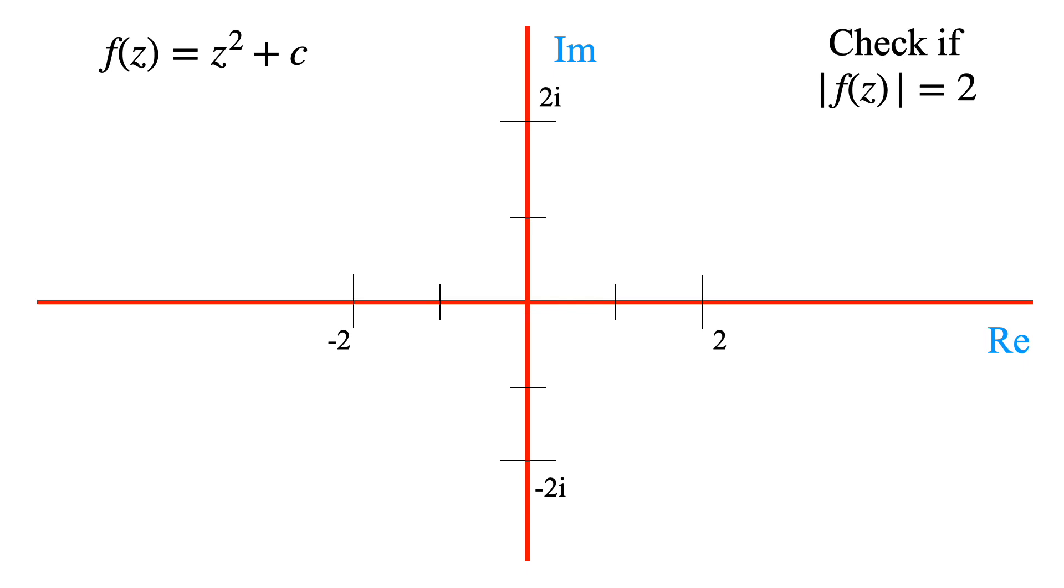All the points that satisfy this will lie on the boundary of the Mandelbrot set. If we can then calculate the length of the curve that results, we will get an approximation of the perimeter. And once again, as the number of iterations increases, we will approach a better approximation to the true perimeter.